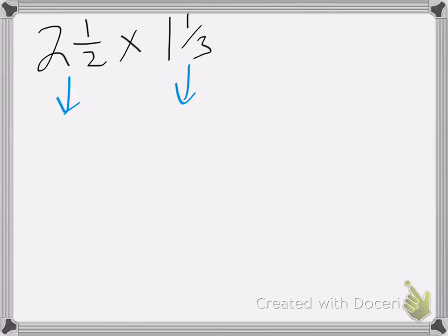Do that by two times two is four, plus one is five, so I have five-halves. One times three is three, plus one is four, so I get four-thirds.